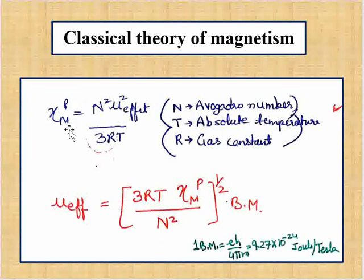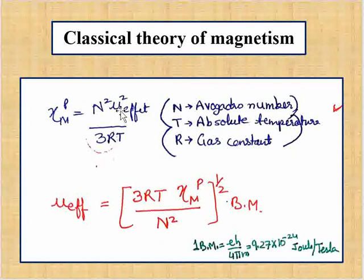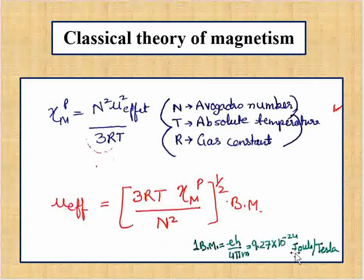If we know the paramagnetic susceptibility, we can calculate mu effective using the relation: χ = N²μ²_eff / 3kT, where N is Avogadro's number, T is absolute temperature, and k is the gas constant. One Bohr magneton equals eħ / 4πm, which is 9.27 × 10⁻²⁴ joules per tesla. If we know molar susceptibility, we can calculate the magnetic moment.